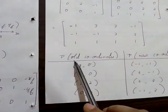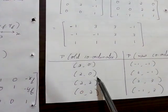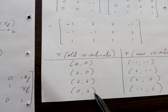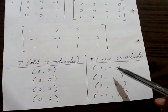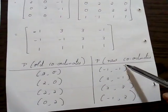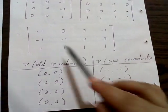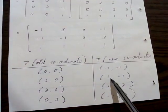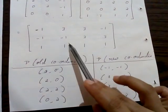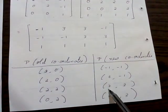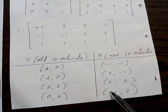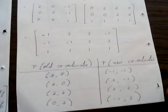The old coordinates were (0,0), (2,0), (2,2), and (0,2). The new coordinates obtained are: (-1,-1), (3,-1), (3,3), and (-1,3).